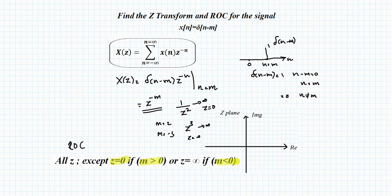If m is less than 0, for example m = −3, the expression becomes z³, and when z = ∞ the result is also infinity, so the Z-transform does not exist at z = ∞. Therefore: ROC is all Z except z = 0 if m > 0, and all Z except z = ∞ if m < 0.